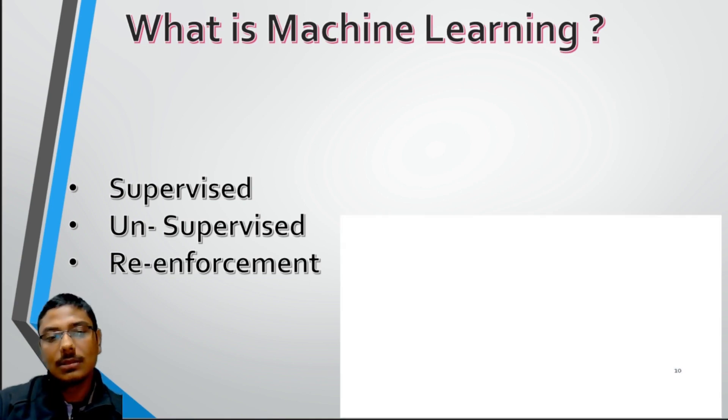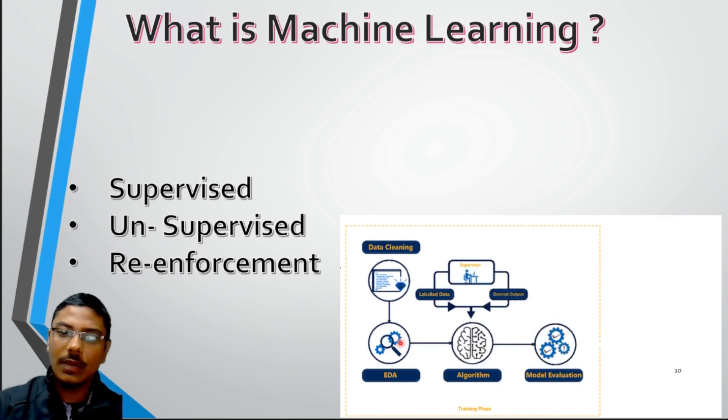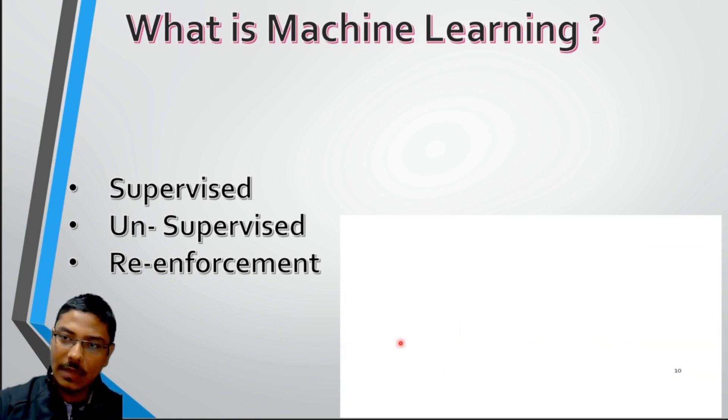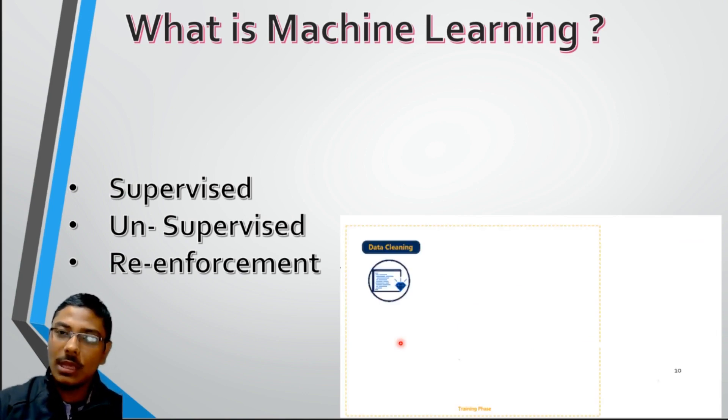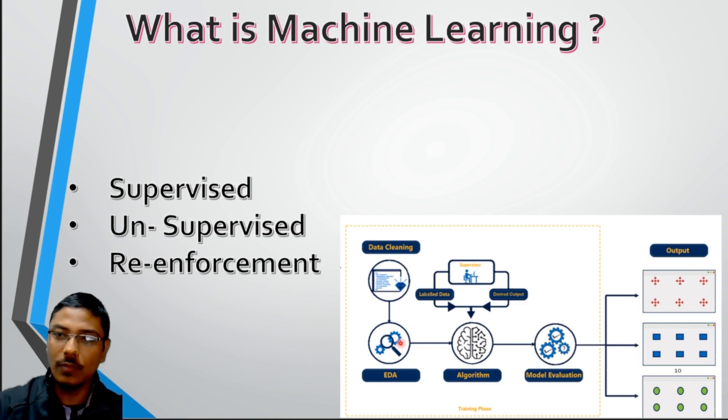In our case, we used here supervised learning. Supervised learning is like whenever we are giving an input to the machine, along with the input, we label these inputs. Because of this label, it can identify itself and memorize these things. Whenever we give similar kind of images, then it can easily identify what is the output. This is how supervised learning works.